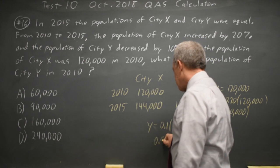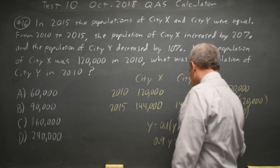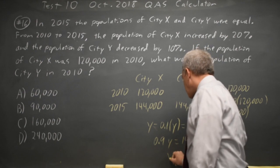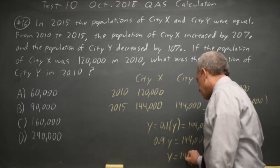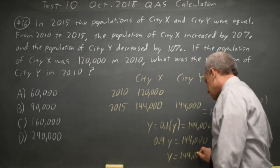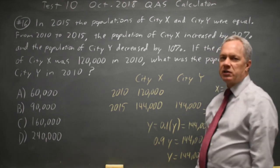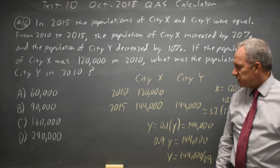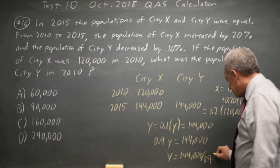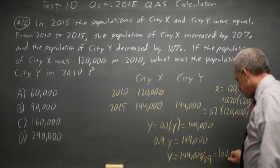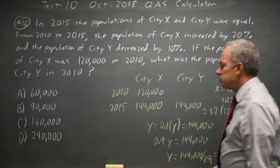Or Y equals 144,000 over 0.9, and you can do that on your graphing or scientific calculator and you get 160,000, choice C.